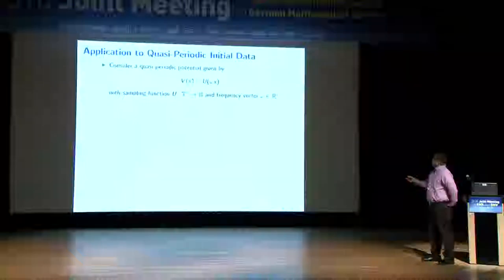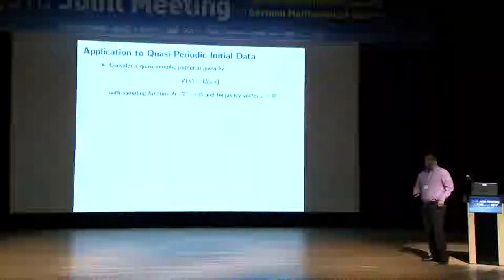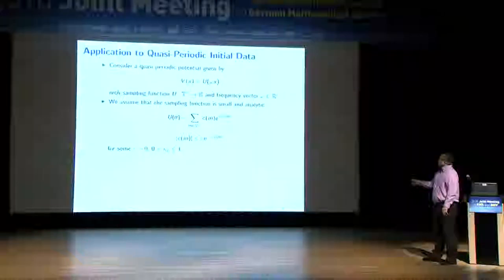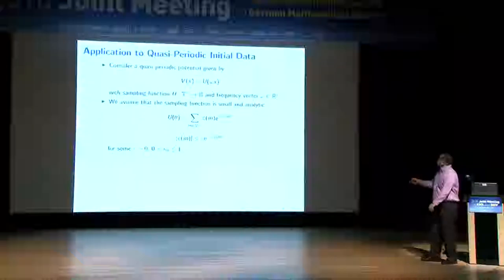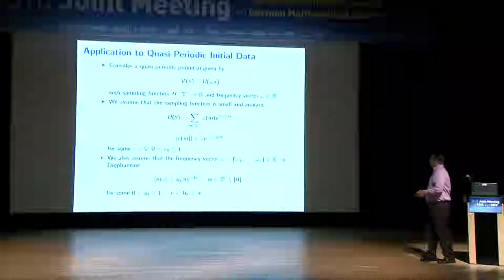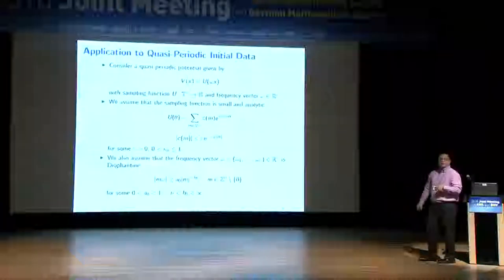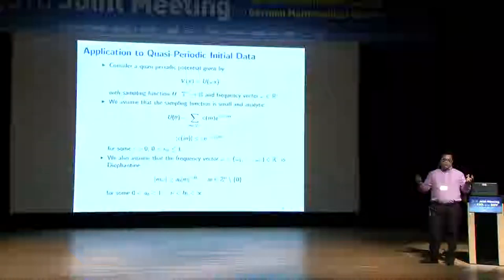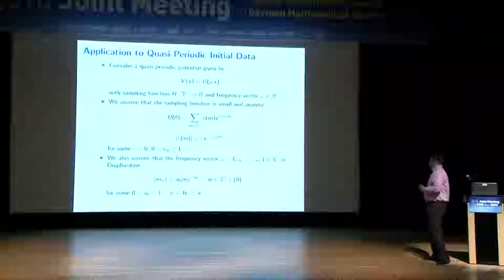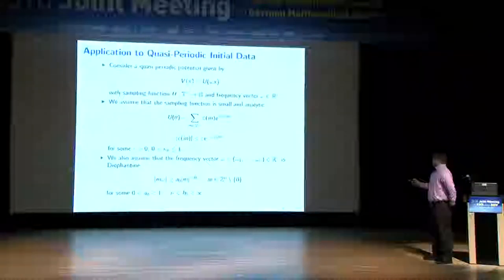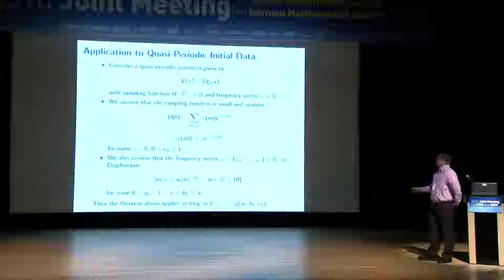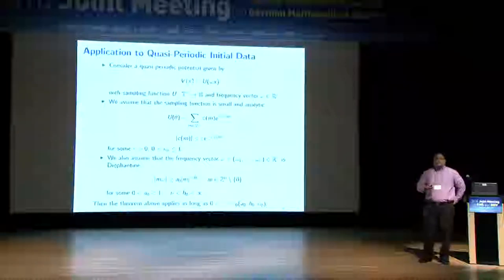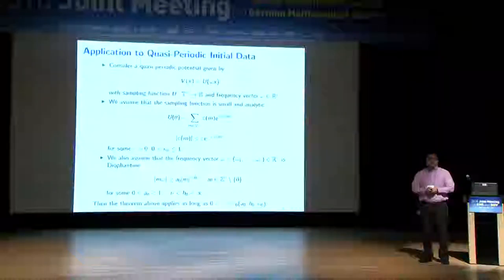What we need is that the continuous sampling function U is analytic, expressed in terms of exponential decay of the Fourier coefficients. We also need it to be small — there is a small epsilon in front of it. And this translation vector, the frequency vector, has to be Diophantine: it should not come back to the origin very fast, a condition obeyed by almost all frequency vectors. So this is a perturbatively small case where epsilon must be small as a function of the Diophantine condition and the decay rate.